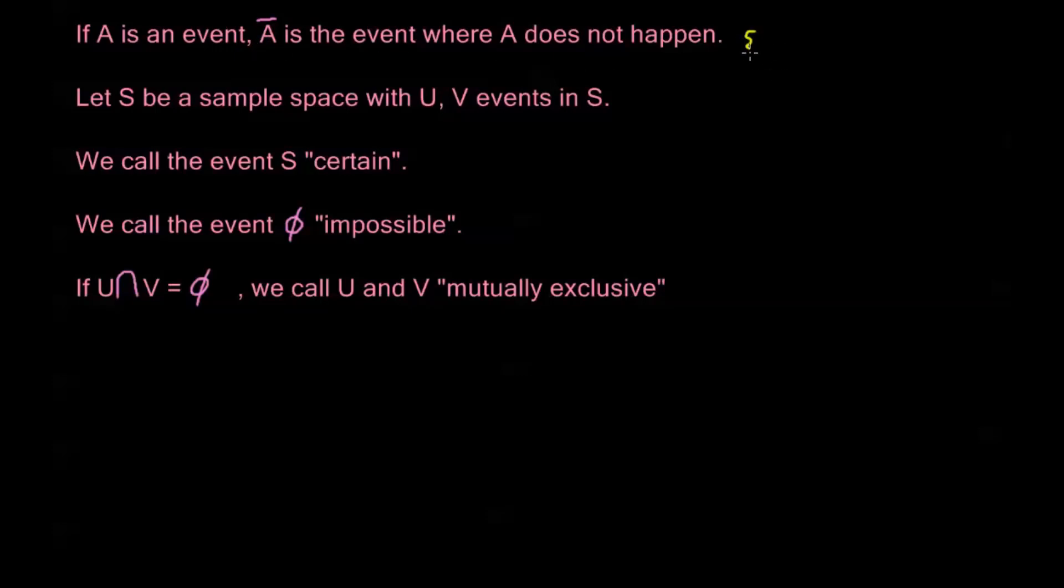So in the previous example where John wins {1, 2}, the complement is going to be the complement in our sample space. So that's going to be {3, 4, 5, 6}. So this A complement here is the event in which John does not win, right?